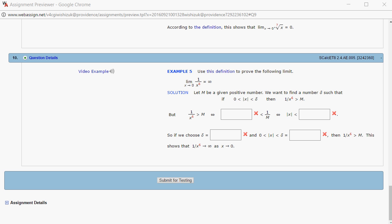So let m be a given positive number. We want to find a number delta such that as long as the absolute value of x is between 0 and delta, we have 1 over x to the 6th function value is going to be greater than m.